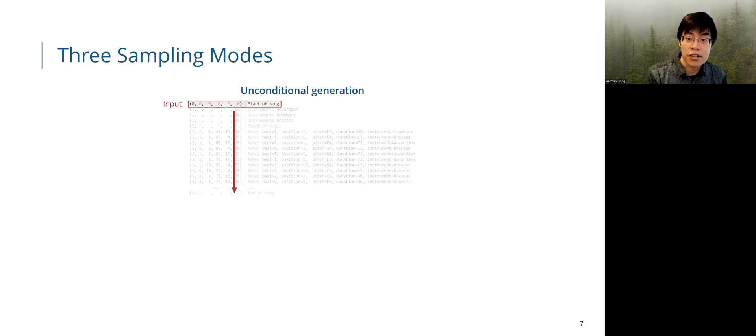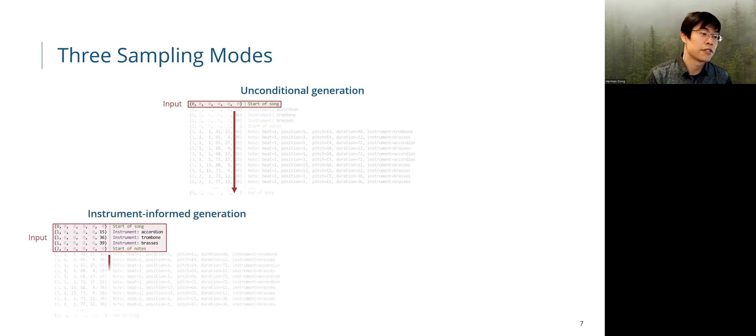One great benefit of the proposed model is that we can achieve three different tasks without retraining the model. First, we have unconditional generation, where we only provide a start of song event as input. Second, for instrument-informed generation, we provide a list of instruments and start from the start of note event.